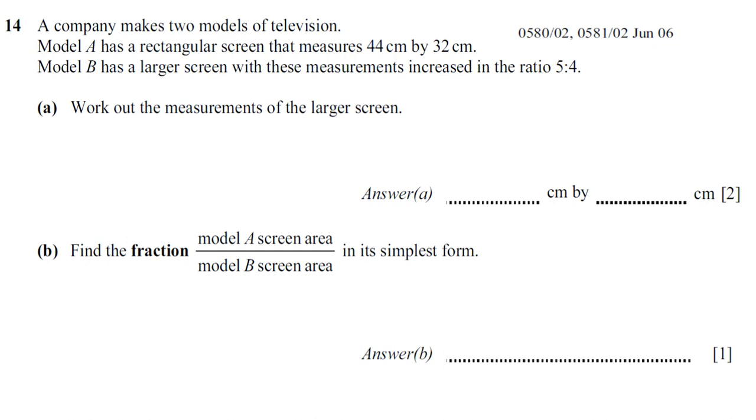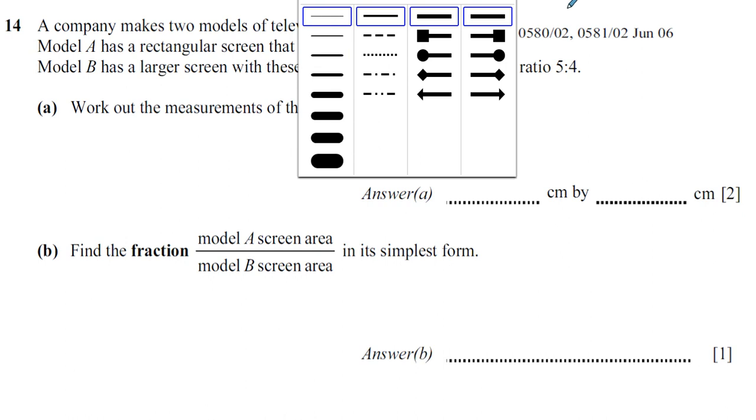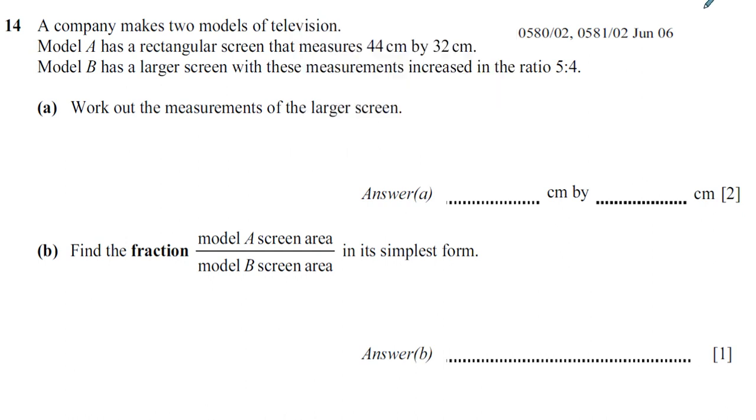Question number 14, June 2006, paper 2. I've had a request to answer this question. A company makes two models of television. Model A has a rectangular screen that measures 44 cm by 32 cm. Model B has a larger screen with these measurements increased in the ratio 5 to 4. Work out the measurements of the larger screen.